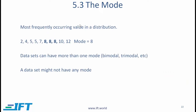The mode is simply the most frequently occurring value in a distribution. In this simple set, the mode is 8. We can sometimes have data sets with more than one mode — called bimodal if there are two modes or trimodal if there are three. It is also possible that a data set might not have any mode.